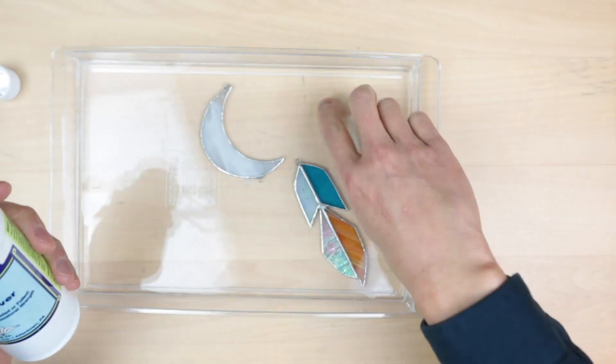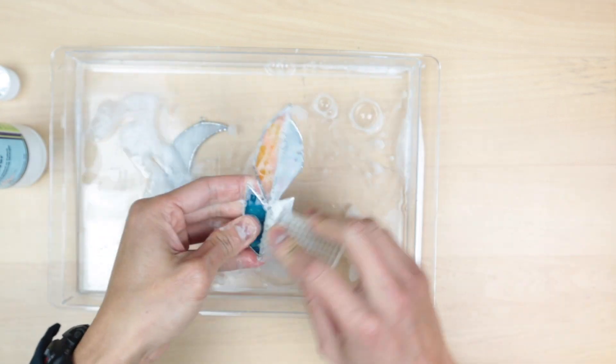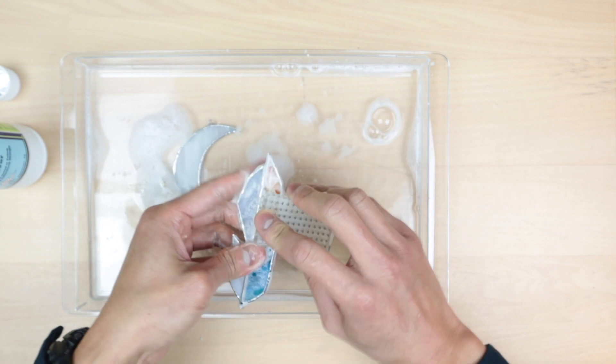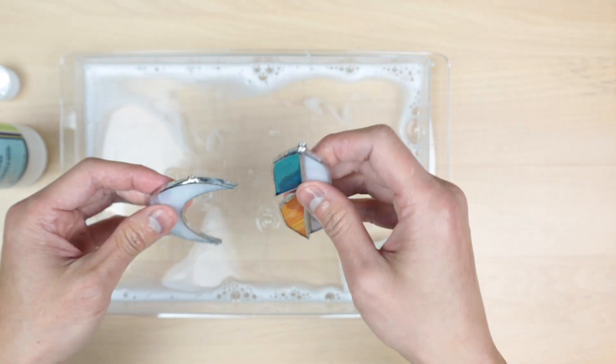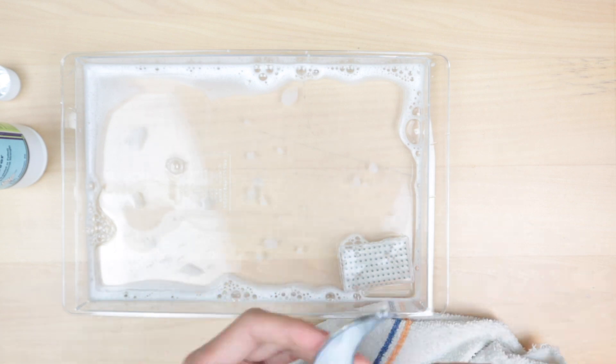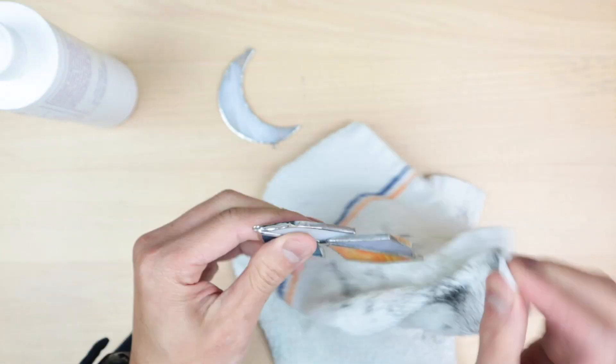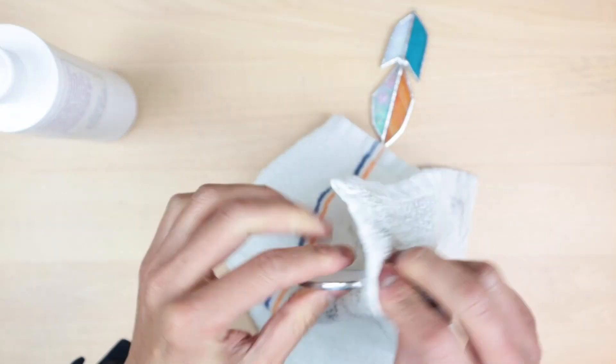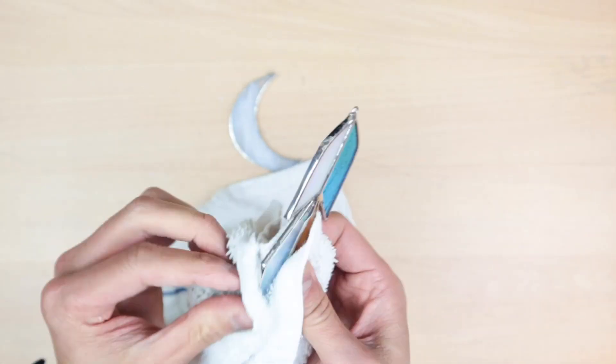After we're done with the soldering we'll scrub and clean off all the flux. I like to use CJ's flux remover but you can use plain soap and water too. Dry everything completely and it's time to polish. I'm using Leva's stained glass polish and this gives a nice and bright shine to the silver solder. You can use fine steel wool and then wax it but I find this polish is much brighter.